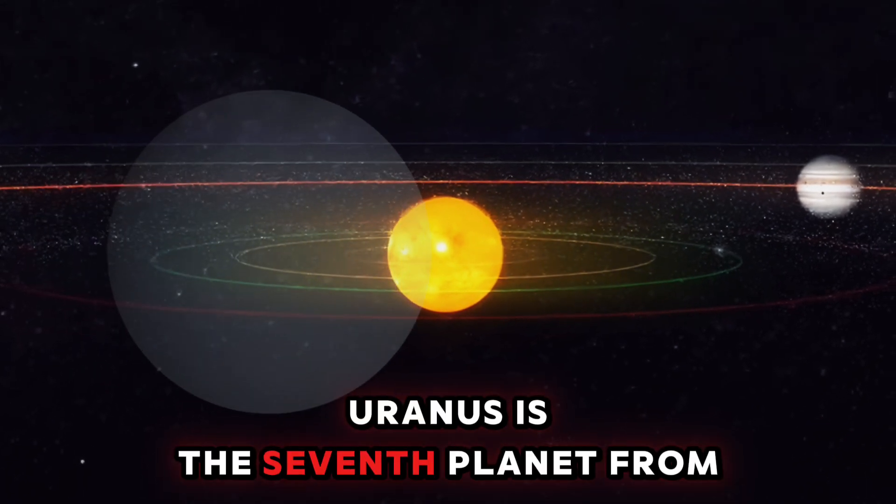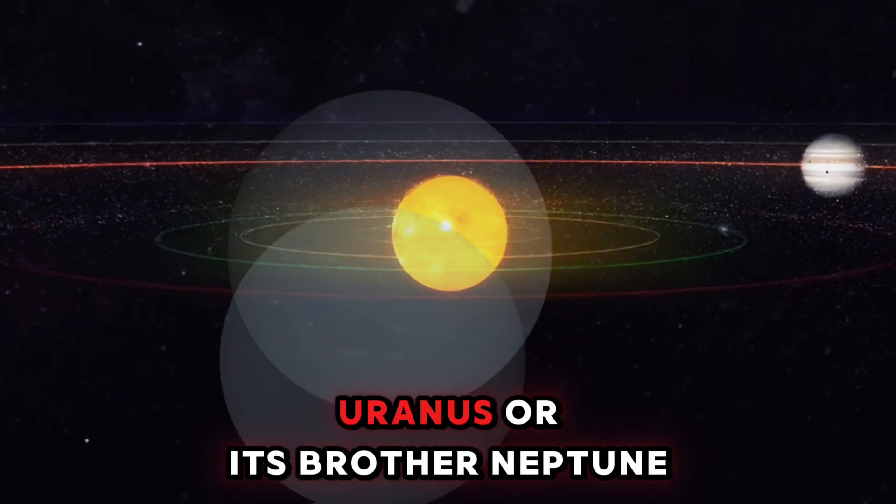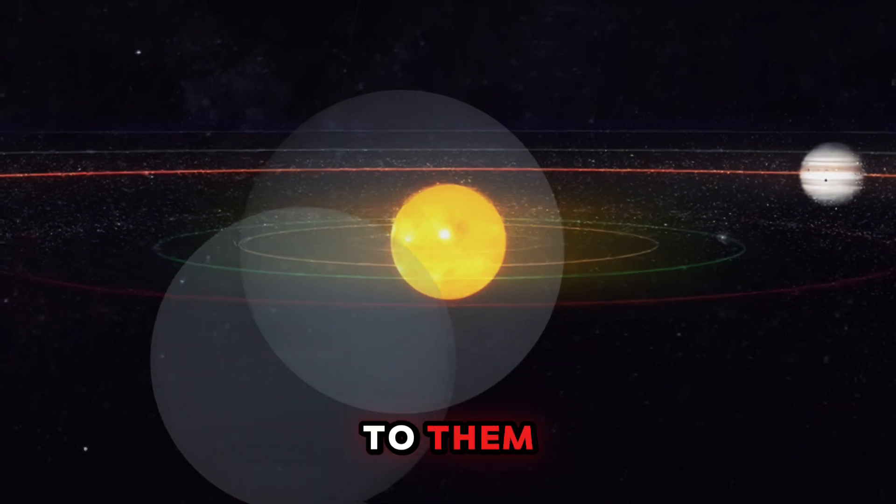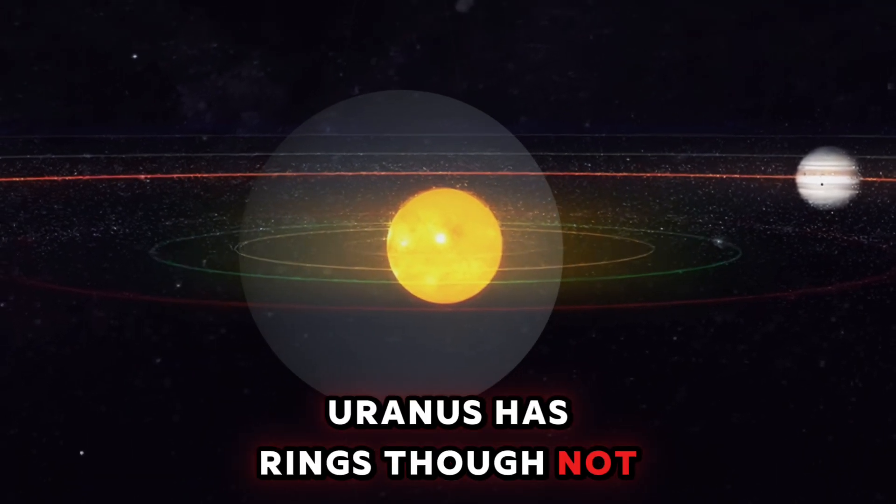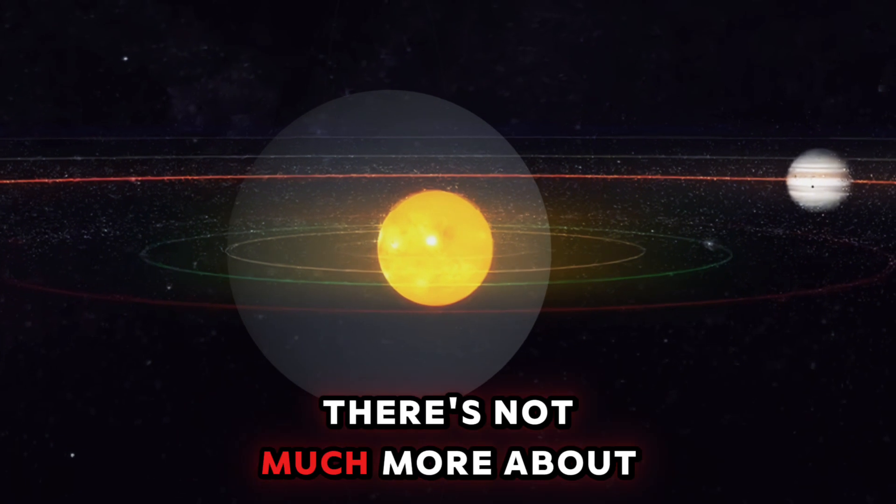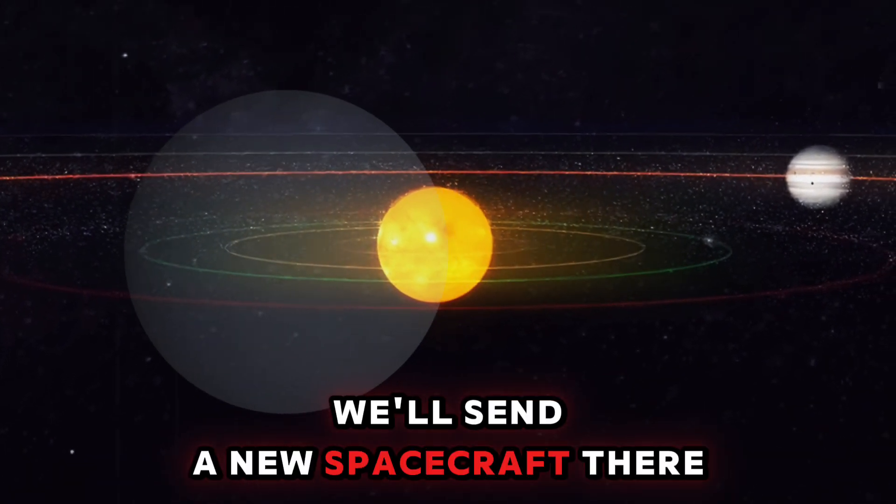Uranus is the seventh planet from the sun, and dirty jokes about its name are deserving of a shun. Not much is known about Uranus or its brother Neptune, because Voyager 2 is the only craft to ever go to them. Uranus has rings, though not as great as Saturn's, and it's usually devoid of any interesting patterns. There's not much more about this place which I can say, but hopefully we'll send a new spacecraft there someday.